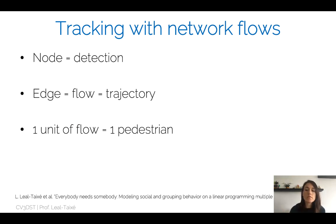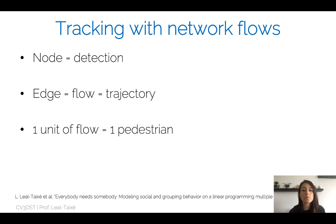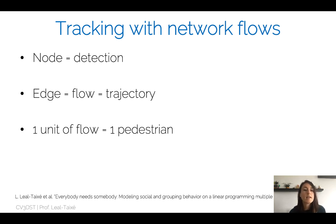To recap: nodes represent detections, edges represent connections between detections forming a trajectory. We also have the concept of flow — this is the family of solvers we use, called network flows. One unit of flow represents one pedestrian, flowing from the beginning of the graph to the end. Sending three units of flow means there are three pedestrians. The algorithm we use to find trajectories is called the minimum cost flow problem.